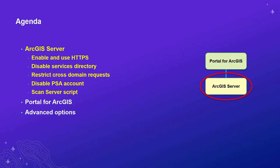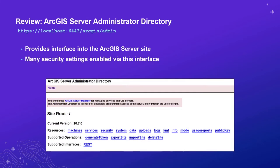Let's discuss our agenda today. We're going to discuss ArcGIS Server: enabling and using HTTPS, disabling the Services Directory, restricting cross-domain or CORS requests, disabling the primary site administrator account, and we'll be promoting the ServerScan script. First, we'll review the ArcGIS Server administrator directory, as this is where many of the updates we'll need to make are performed. The admin directory provides an interface into the ArcGIS Server site where many security settings are enabled.